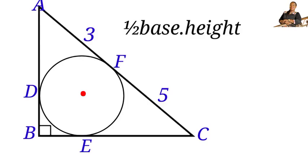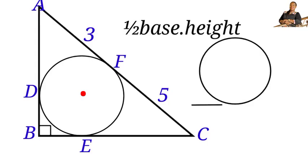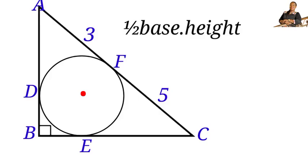Let us take a look at the theorem of tangent and radius. A tangent is a straight line that touches a circle at one point without crossing it. The important property of a tangent is that it is always perpendicular to the radius at the point where it touches the circle. If we draw a line from the center of this circle to point E, it will be perpendicular to this side because this side is tangent to the circle.